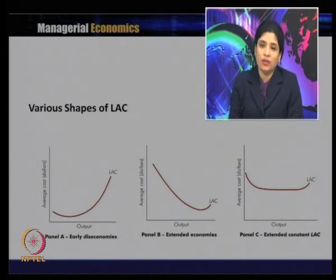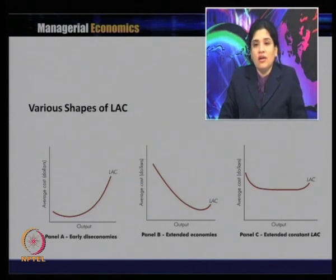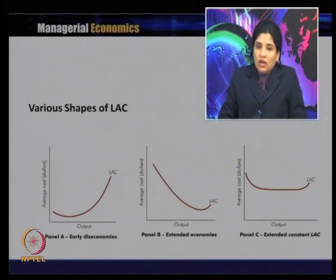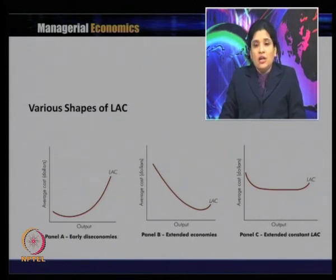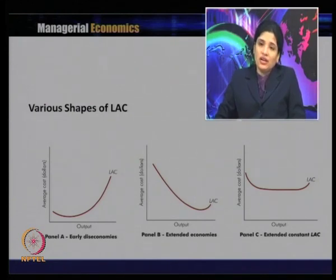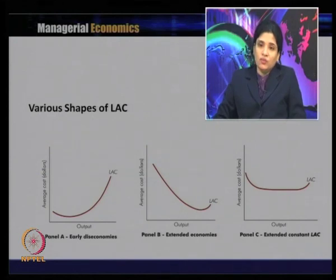This is evidence of early diseconomies. The implication is that inputs increase at a higher cost of production — when the firm expands and increases its scale of production, the cost of production is already increasing. In the general trend, cost initially decreases; but in early diseconomies, the cost of production has risen much before the optimal or minimum point.